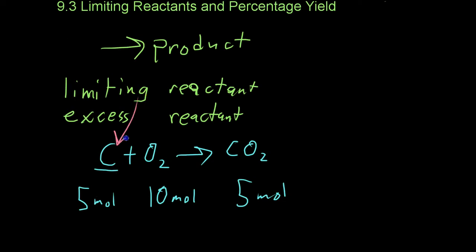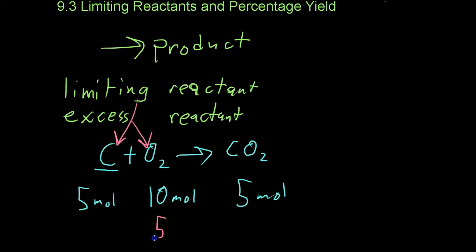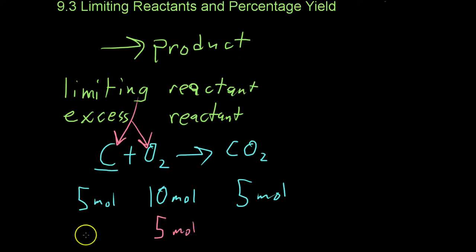Carbon would be the limiting reactant and oxygen would be the excess reactant because you would have 5 moles of oxygen left over after all of the 5 moles of carbon had been burned. Now that we know the terminology, we're going to work on figuring out which one will be the limiting reactant and which one will be the excess reactant for any given reaction.